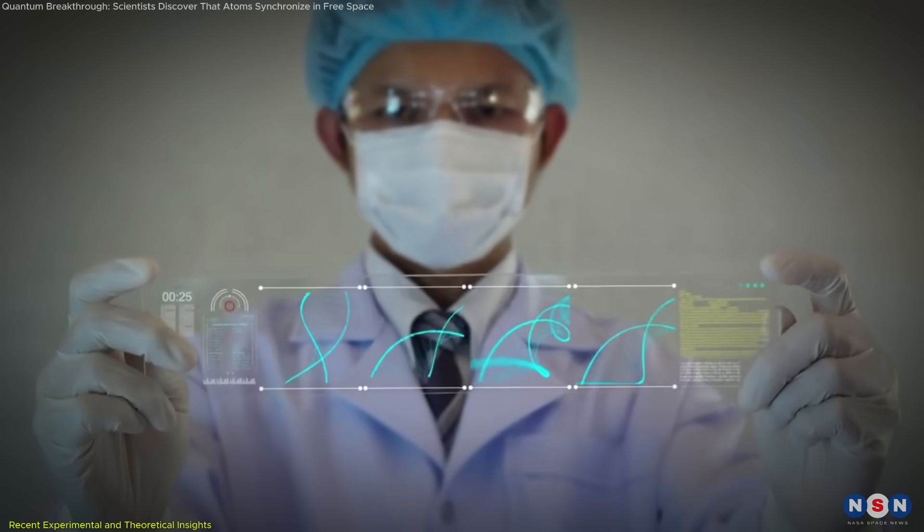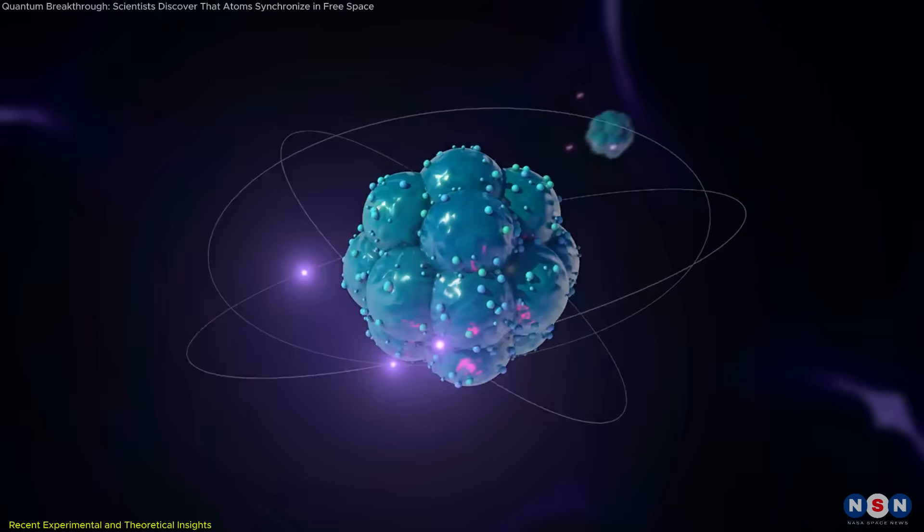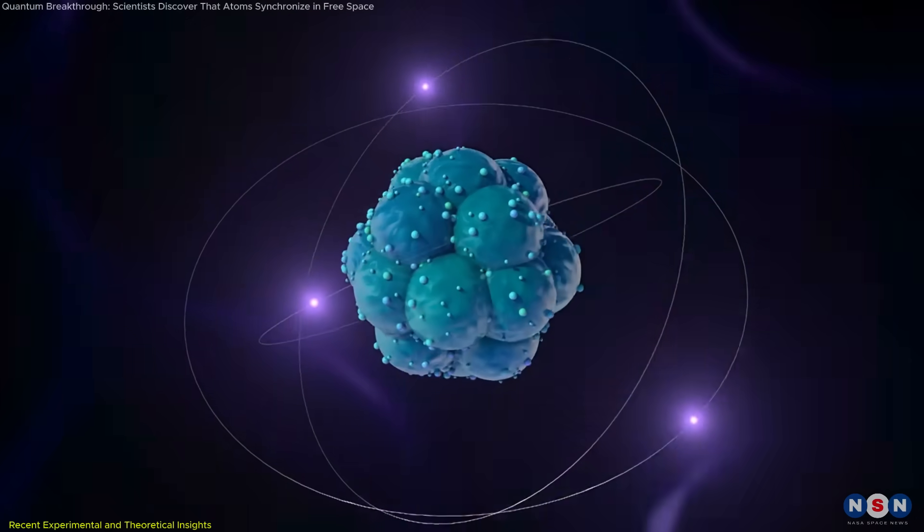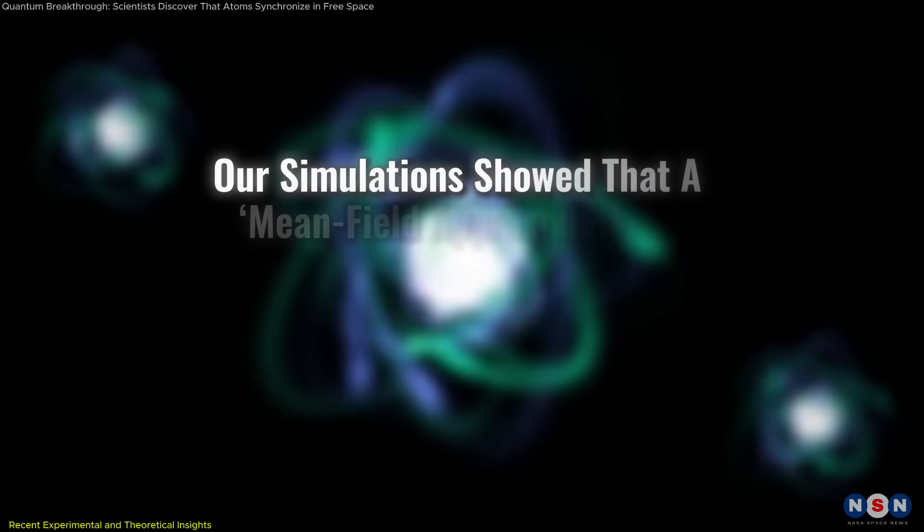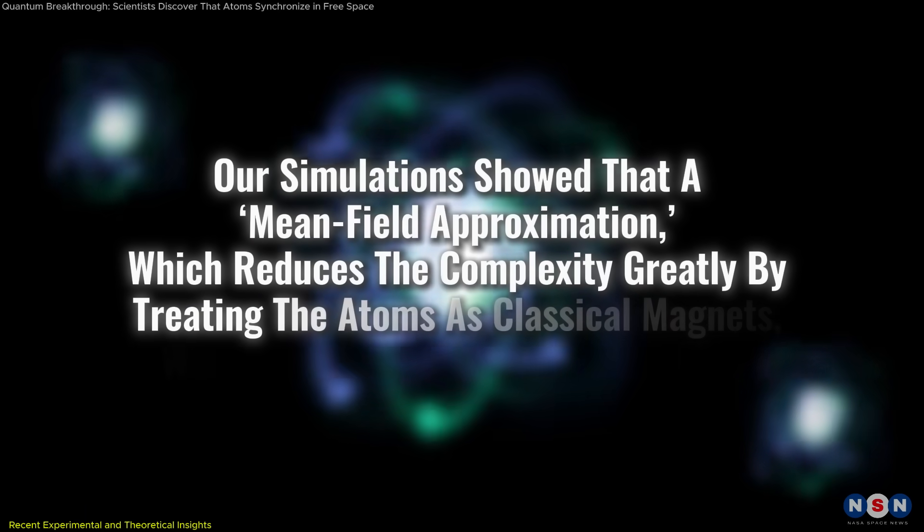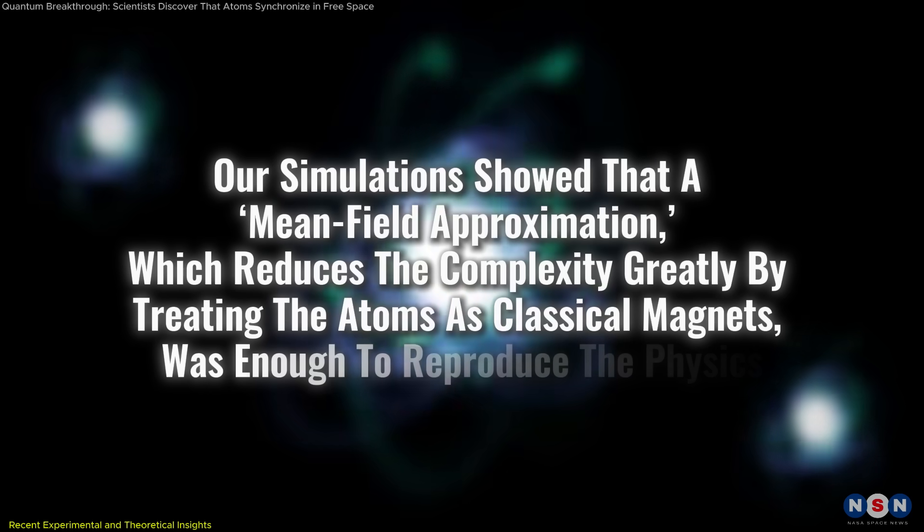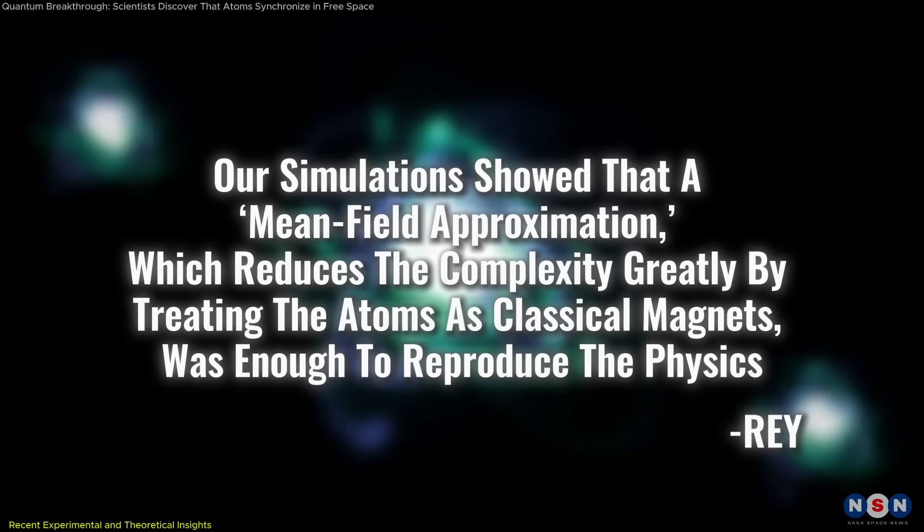The researchers simulated varying conditions, including different laser powers and atom densities, to see how these factors influence the system's behavior. Our simulations showed that a mean field approximation, which reduces the complexity greatly by treating the atoms as classical magnets, was enough to reproduce the physics, Ray noted.